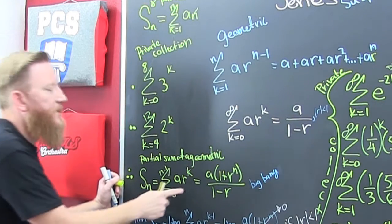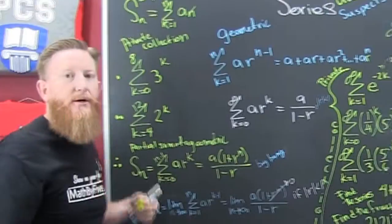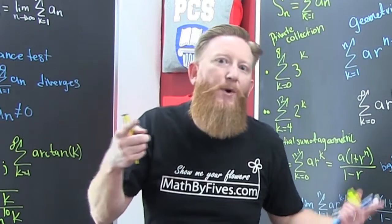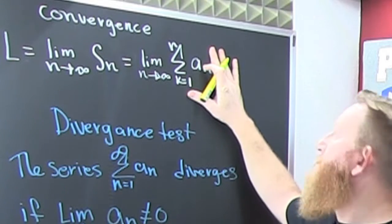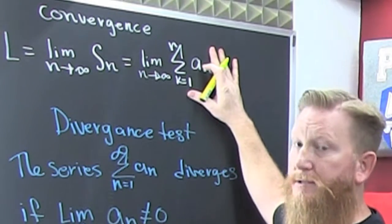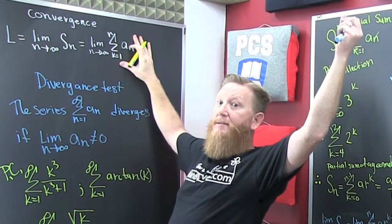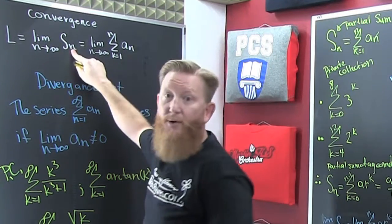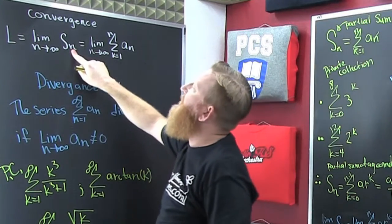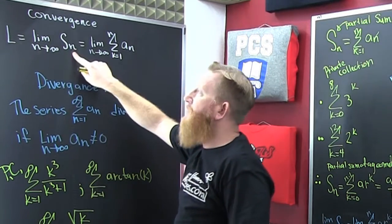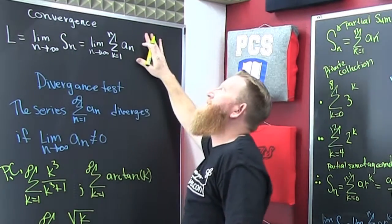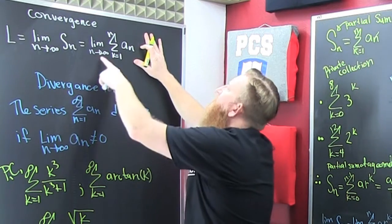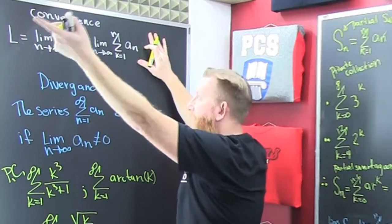Sometimes these series — summations — they sometimes add up to stuff. How can you tell when? Here is the definition of convergence of a series. We need to look at the underlying partial sums. If you add up n terms, that's going to be a partial sum. If you add up forever — n terms going to infinity — that's the limit of the partial sums. If the partial sums actually go to L, then that series converges. So if we look at the limit of the partial sums and that goes to L, then the series also goes to L.